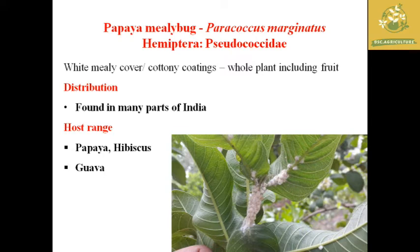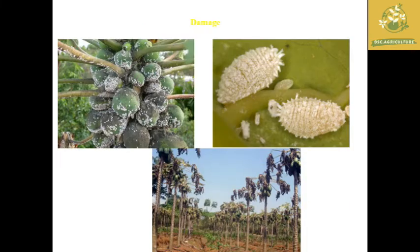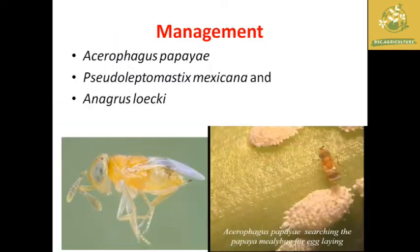The whole distribution of this mealy bug is found in almost most parts of India. They suck the sap as well as the nutrients from the plant, which causes wilting as well as dieback symptoms in the plants. They also have a host range other than papaya, including hibiscus and guava. These are the damages caused by Paracoccus marginatus in papaya plantation areas.